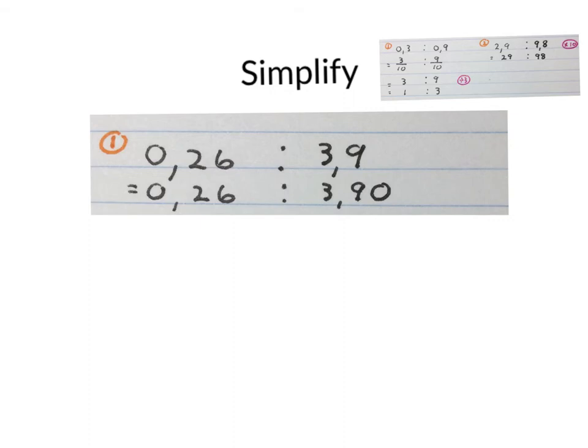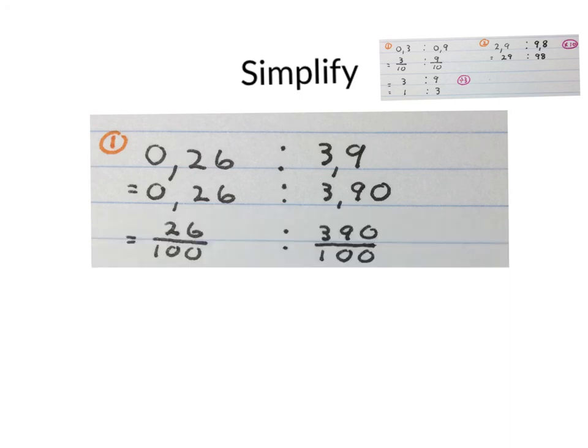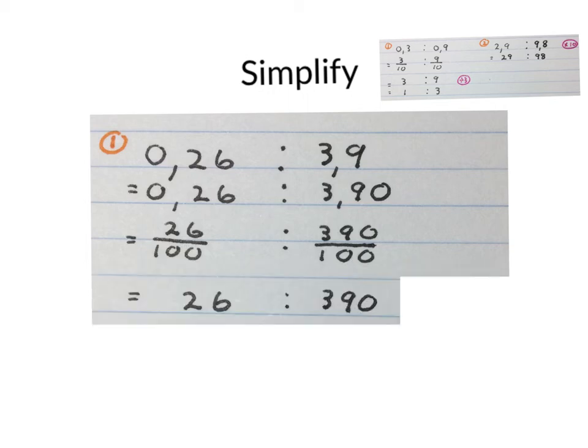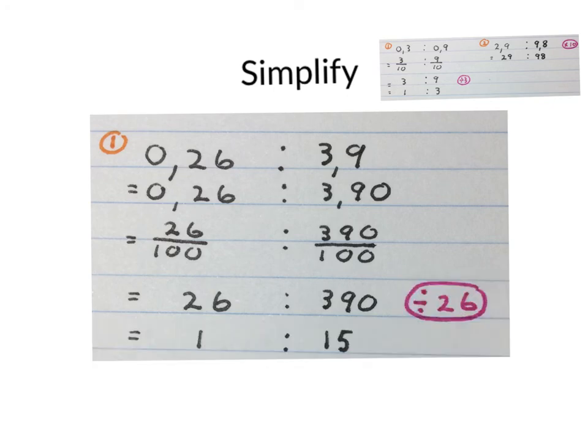Let's simplify 0.26 to 3.9. You might want to put in an extra 0 here to get them in the same order compared to the decimal comma. Then you can convert them to common fractions. This is 26 over 100. This is 390 over 100. Then we get 26 to 390. They have a common factor of 26. I divide 26 into both of them and you get 1 to 15.